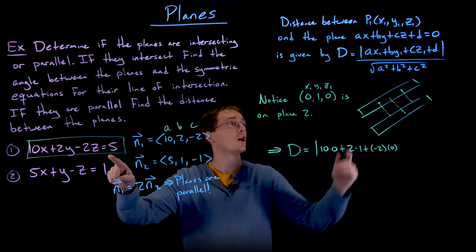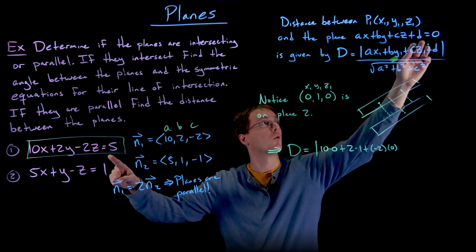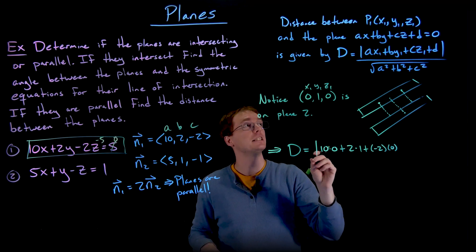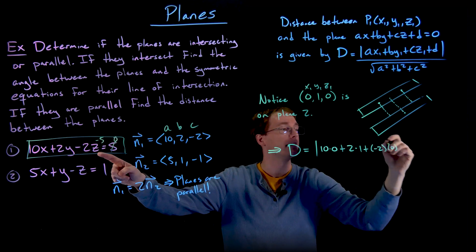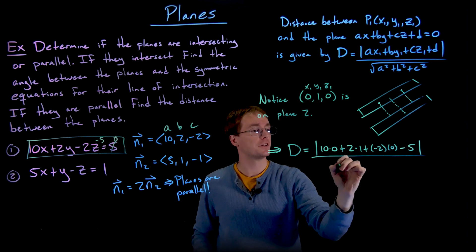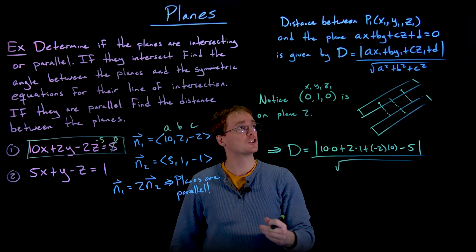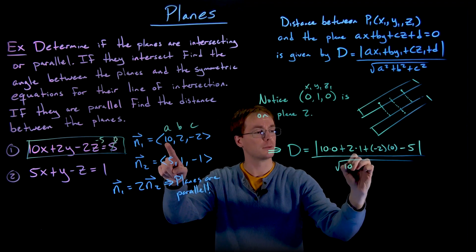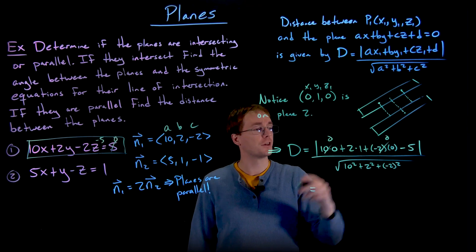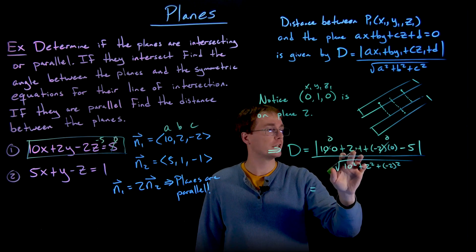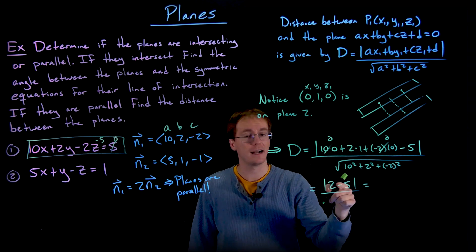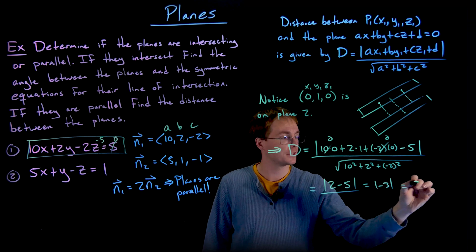Notice the equation of our plane is not written in the required form for this formula — we have to move that 5 over to the left-hand side. So our d value is negative 5, not positive 5. So the numerator simplifies: the first and third terms are 0, what's left is 2 minus 5, and taking the absolute value of negative 3 gives us positive 3.